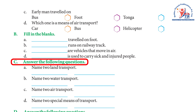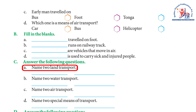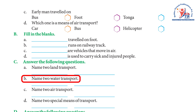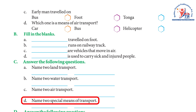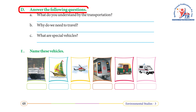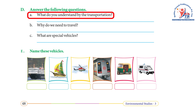Exercise C — Name the following: (a) Name two land transport — Answer: Bus or Car. (b) Name two water transport — Answer: Boat or Ship. (c) Name two air transport — Answer: Aeroplane or Helicopter. (d) Name two special means of transport — Answer: Ambulance and Police Jeep.